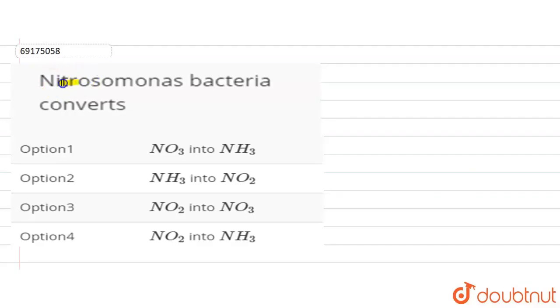The question is: Nitrosomonas bacteria converts. Number first, NO3 into ammonia. NO3, the nitrate into ammonia. Ammonia into nitrite. Nitrite into nitrate and nitrite into ammonia. So Nitrosomonas bacteria will convert.